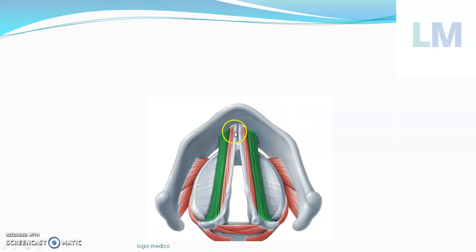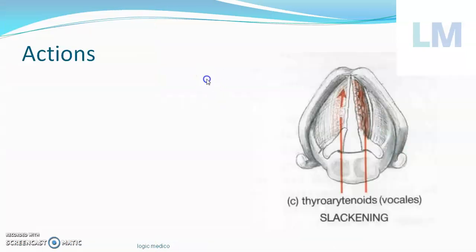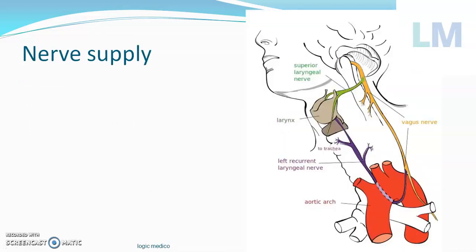The vocalis is within the vocal cord — so will it tense it or relax it? The correct answer: vocalis, along with the thyroarytenoid muscle, is a relaxer of the vocal cord. Though we call it a relaxer, it doesn't relax the entire vocal cord. It tenses the anterior part but relaxes the posterior part, due to the unique attachment of the vocalis — anteriorly it is attached to the thyroid angle, so that portion gets tensed, while the portion attached to the vocal ligament gets relaxed. Overall the action is considered relaxation of the vocal cord.